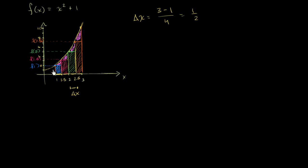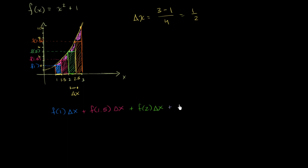The area of the first rectangle is the height f of 1 times the base delta x. The area of the second rectangle is f of 1.5 times delta x. The area of the third rectangle is f of 2 times delta x. And finally, the area of the fourth rectangle is f of 2.5 times delta x. This sum gives us the approximate area under the curve.